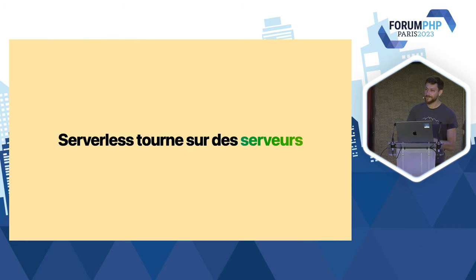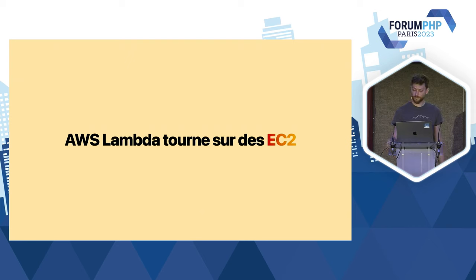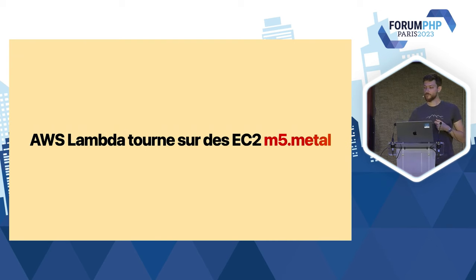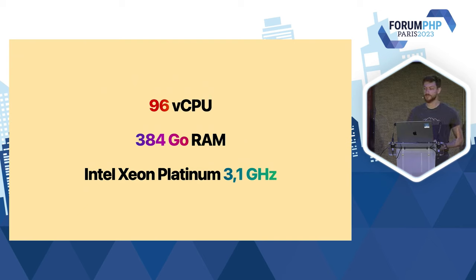Le secret est révélé : les serverless tournent sur des serveurs. Ce que j'appelle les instances va tourner sur des serveurs chez AWS, dans des racks dans les data centers. Plus précisément, AWS Lambda tourne sur des EC2. EC2, c'est un service proposé par AWS de serveurs. L'équipe AWS Lambda réutilise les EC2 pour faire tourner les instances dessus. Plus précisément, AWS Lambda tourne sur des EC2 de type M5 Metal — ces instances, c'est des très grosses instances avec beaucoup de CPU, beaucoup de RAM. Sur une EC2, Lambda va faire tourner plein d'instances de plein de clients différents. C'est du gros mutualisé.